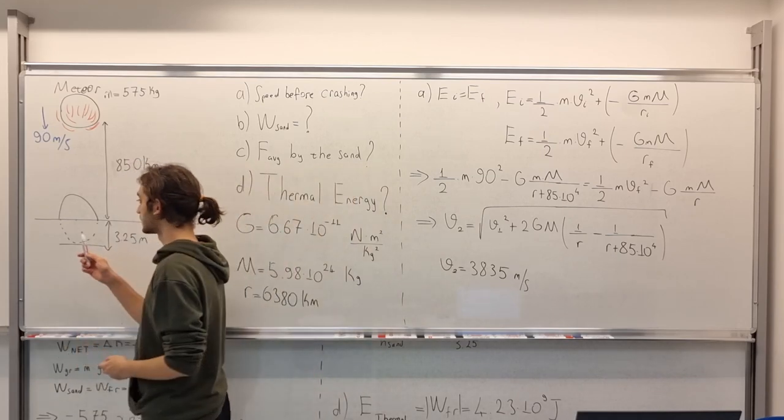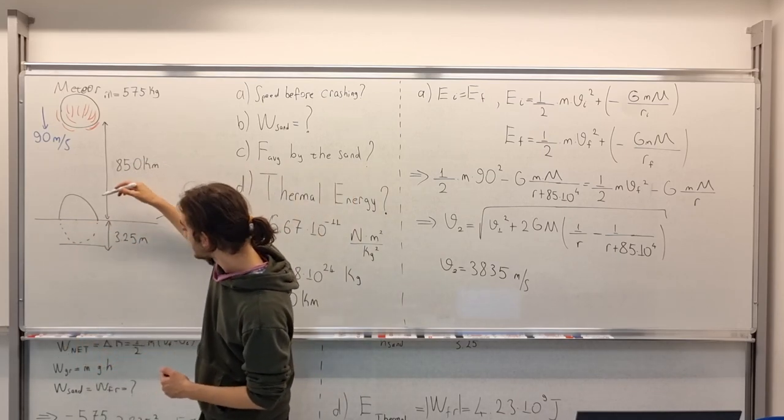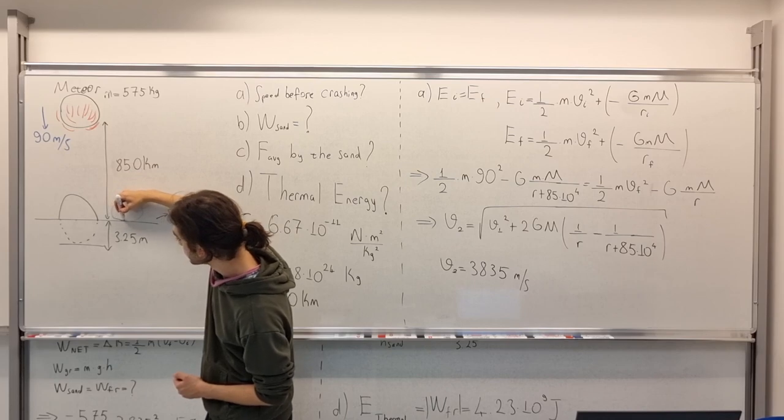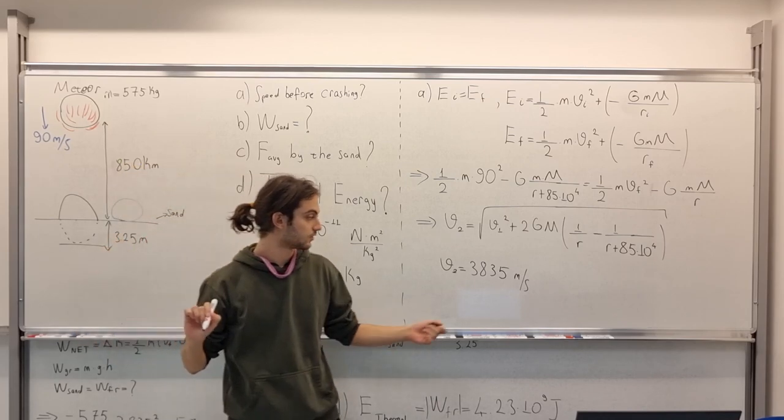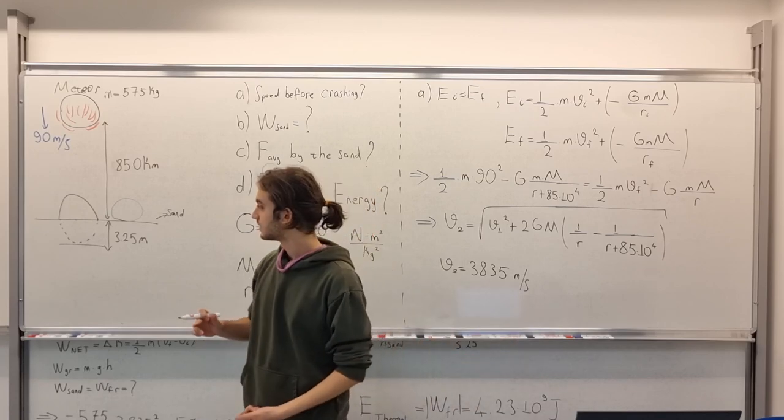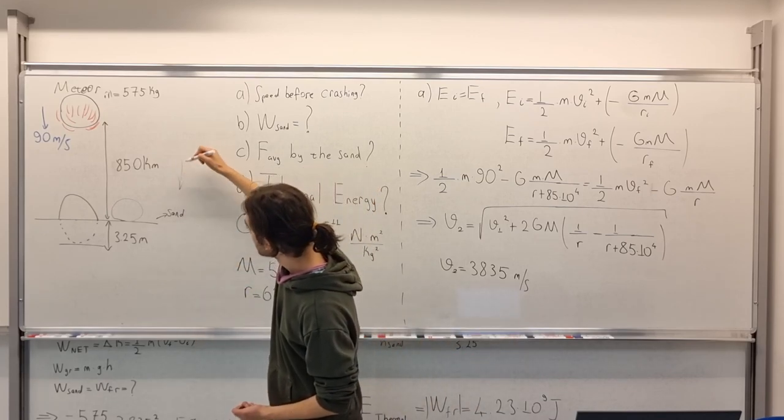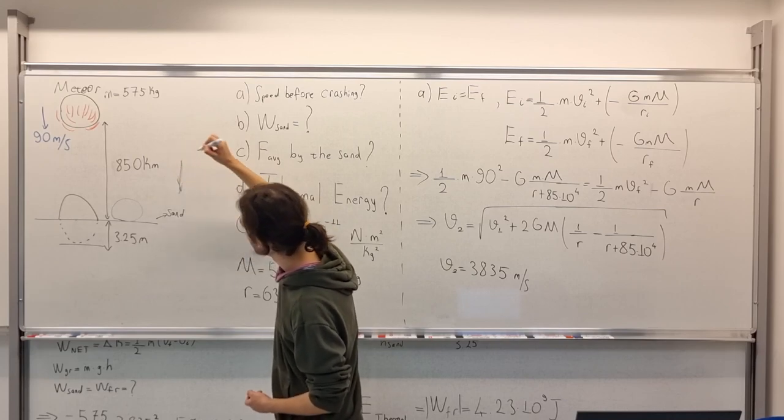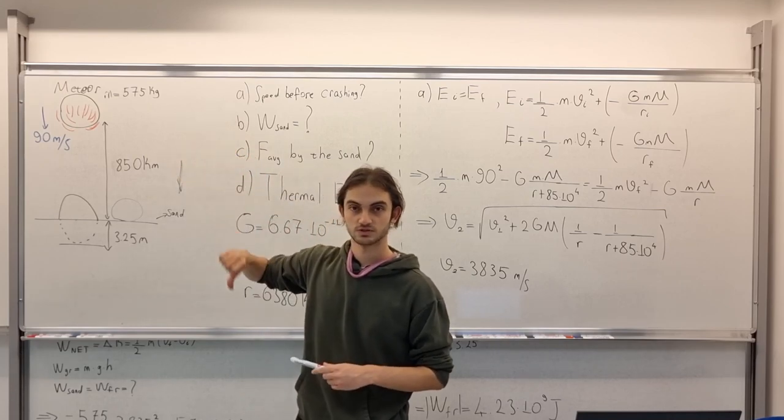3835 meters per second. When the meteor crushes the surface, right before touching it actually, it has a speed of 3835 meters per second. And its velocity would be, we will have a vector like this, downward pointing.